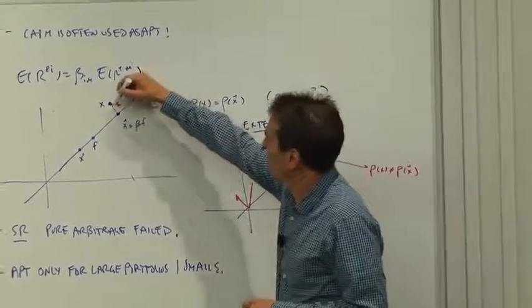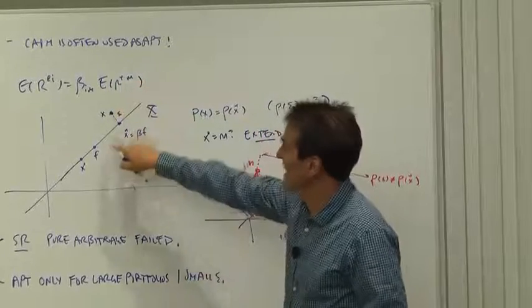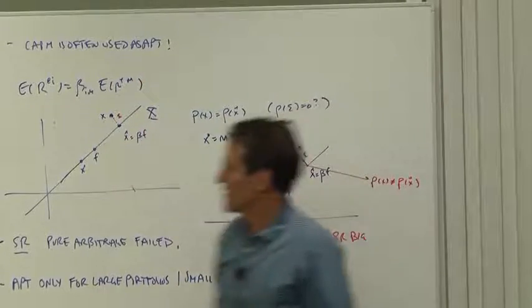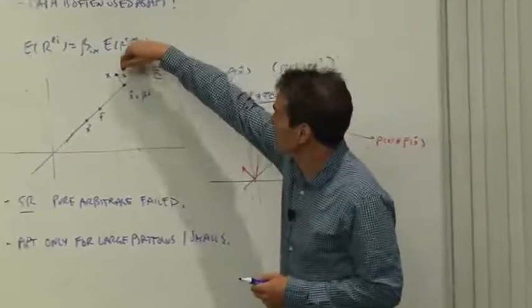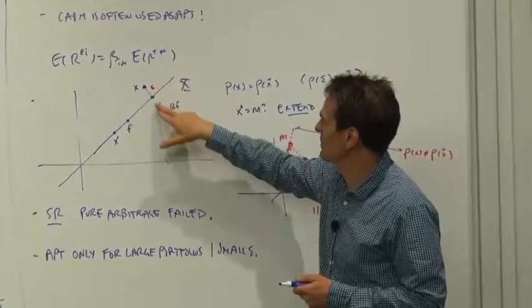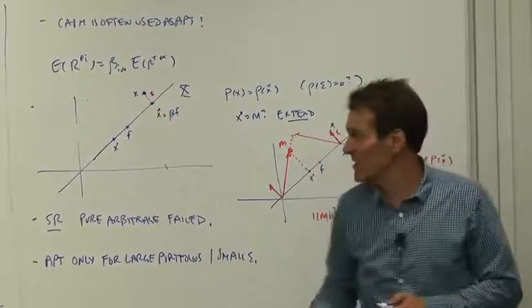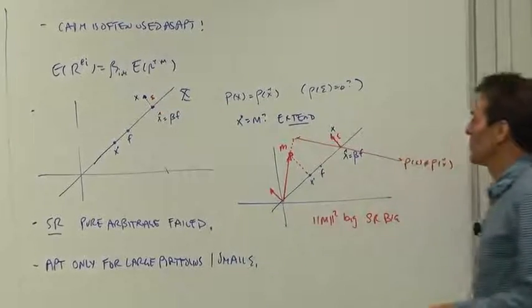The APT says, look, let's make a projection. Let's run x on the factors. That is in state space what this regression does in moment space. We're projecting x on the factors. We're finding the smallest possible residual. We're finding the hedge payoff that is closest to the original payoff. And epsilon, there's our residual there.